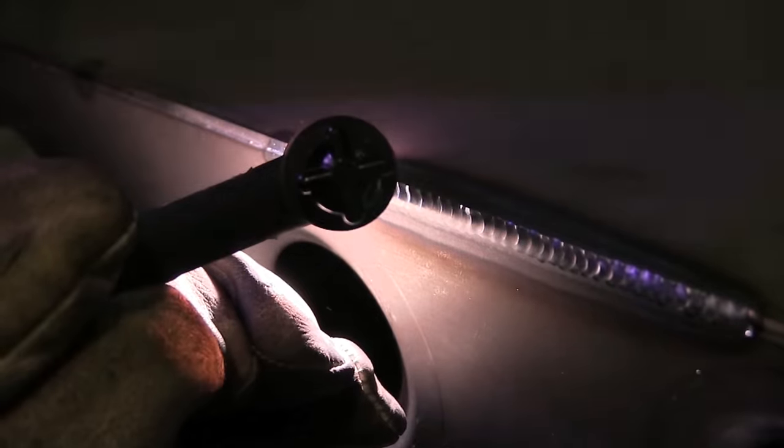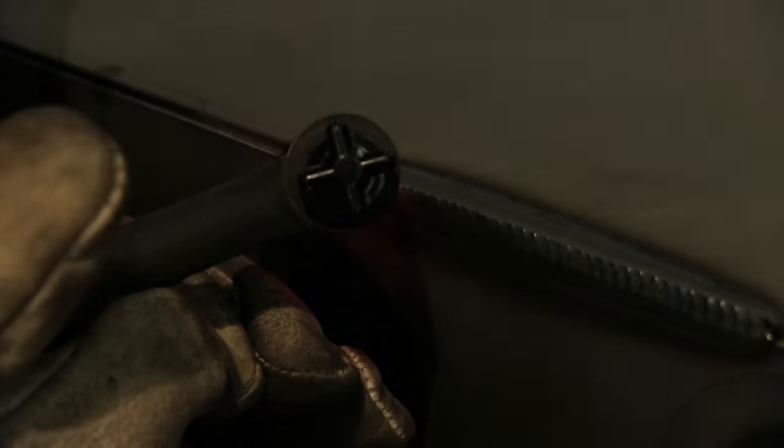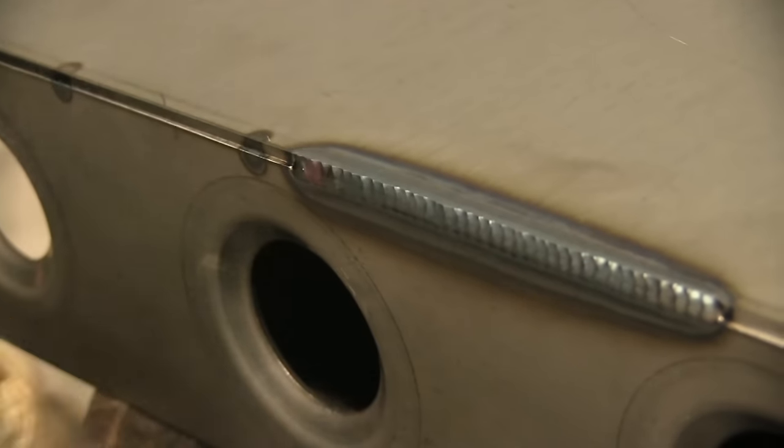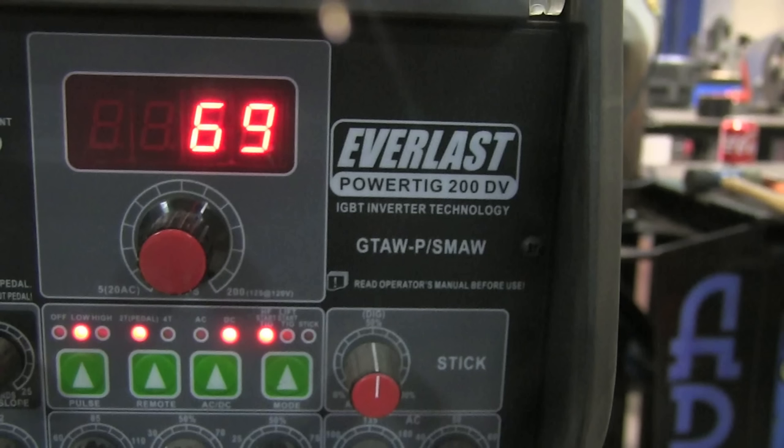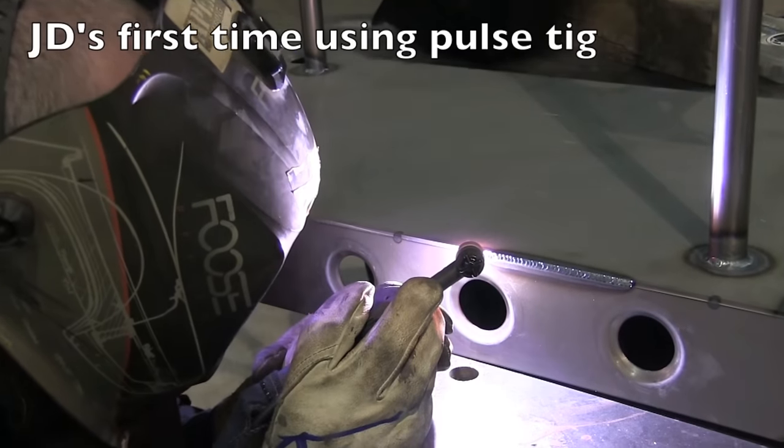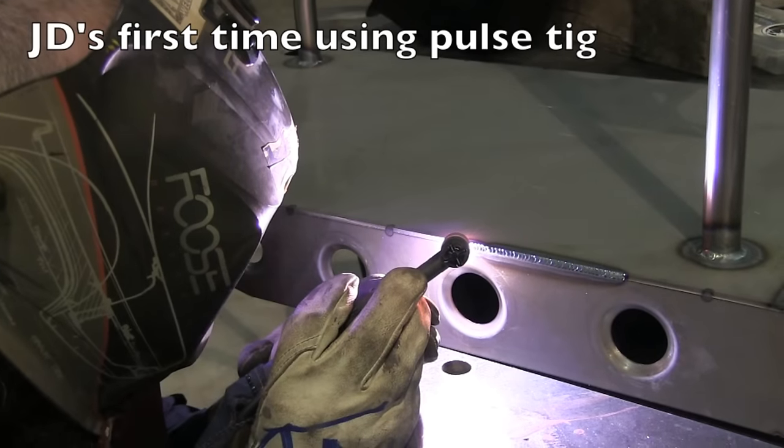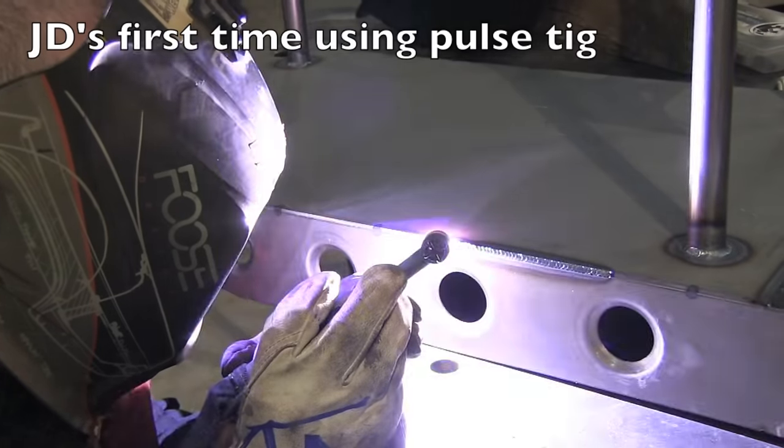And it takes more amperage when you're pulsing. Like the average readout on the machine for running this bead right here is about 69 amps. I had to set it up to 124 amps to get that because it's pulsing in between a low current and a high current. So this is JD's first ever time using pulse TIG and he's doing pretty good.